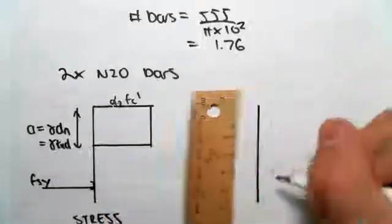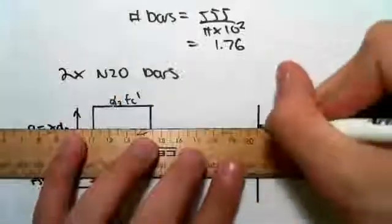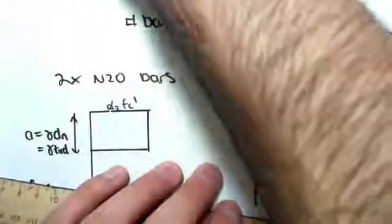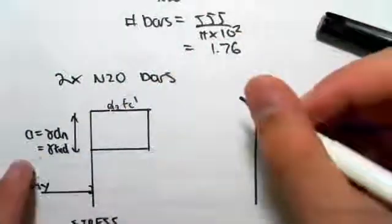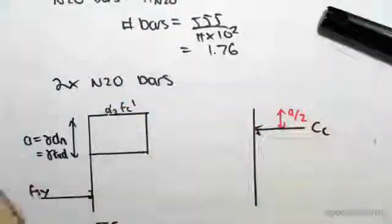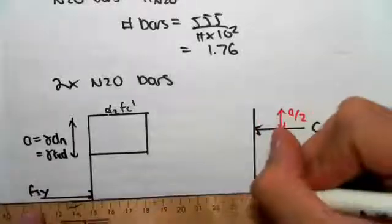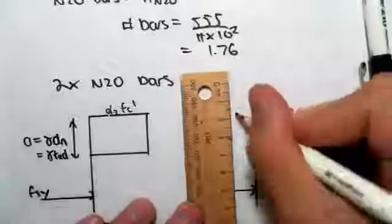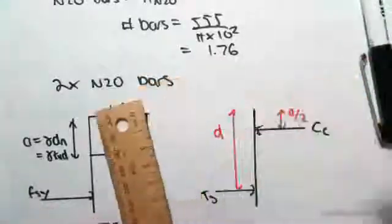In terms of the force diagram, we can redraw this as the compression in the concrete, which acts at a distance. If that height is A, this height is at A on 2. And then we have the tension in the steel at the bottom, which acts at a distance D, which we found in the previous video.